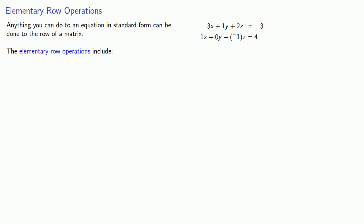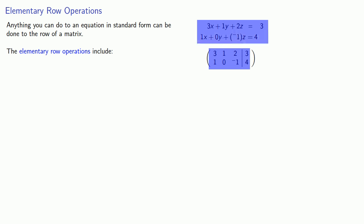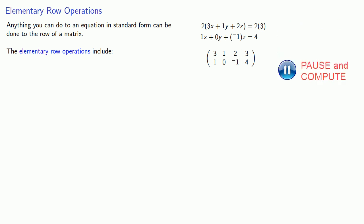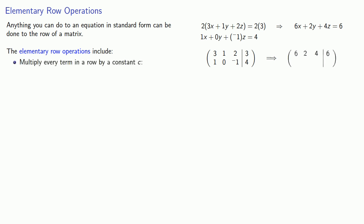Suppose we have a system of equations in standard form. We can write down the augmented coefficient matrix with each row corresponding to one equation. One thing we can do is take an equation and multiply both sides by a constant. This has the effect of multiplying every coefficient and the constant by the same number. Since every row corresponds to an equation, this corresponds to multiplying every term of a row of the matrix by a constant, giving us a new row with new coefficients and constants.